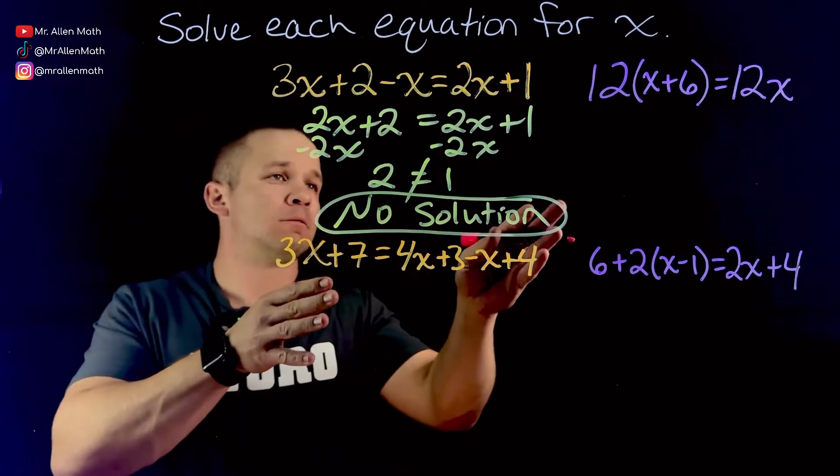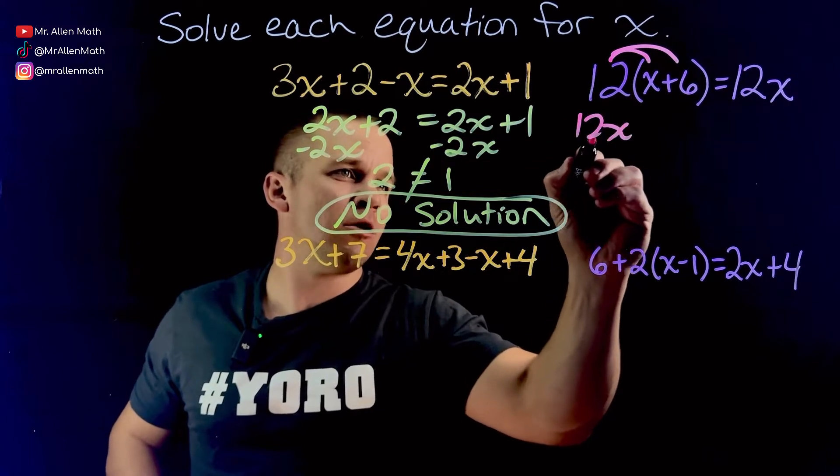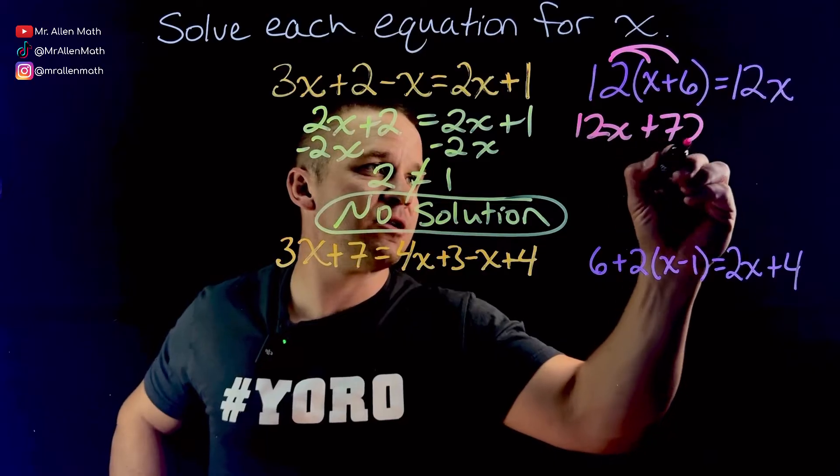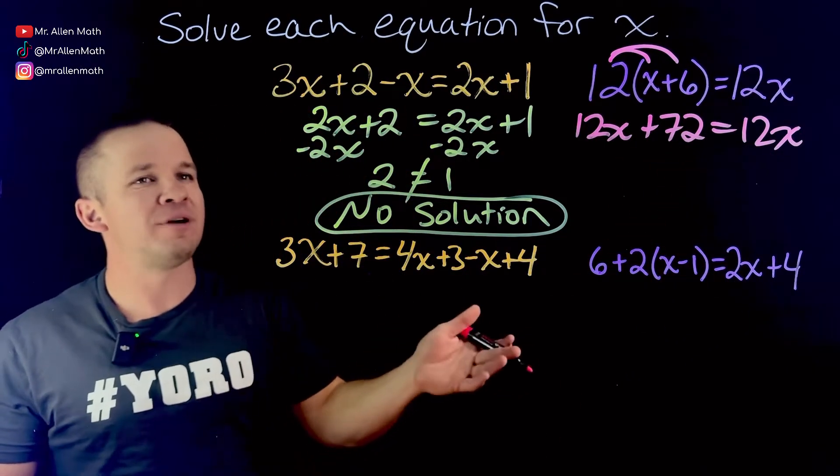Next one over here, I gotta distribute first. Distribute the 12. So I'm gonna get 12x, oh boy, 12 times 6, I think it's 72, plus 72 equals 12x. Uh-oh, we got 12x on each side.